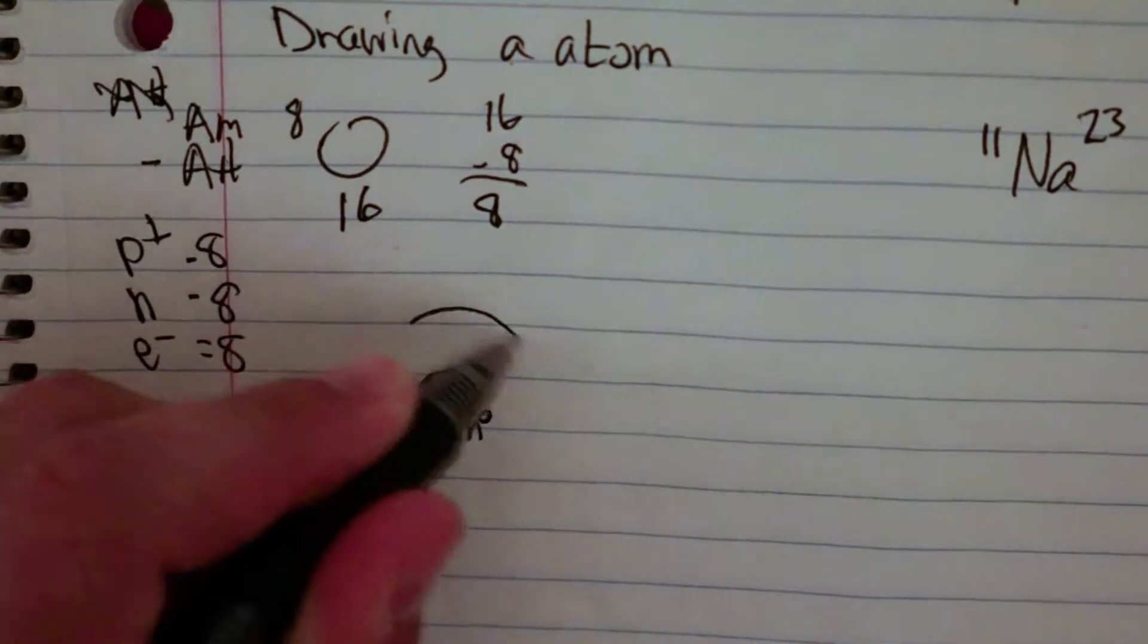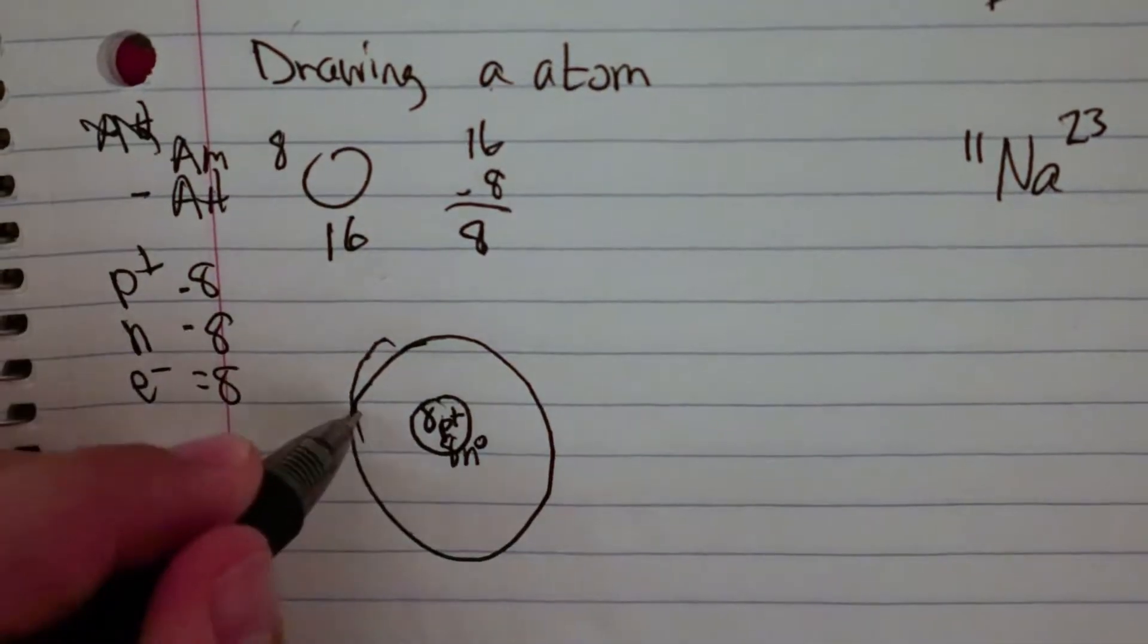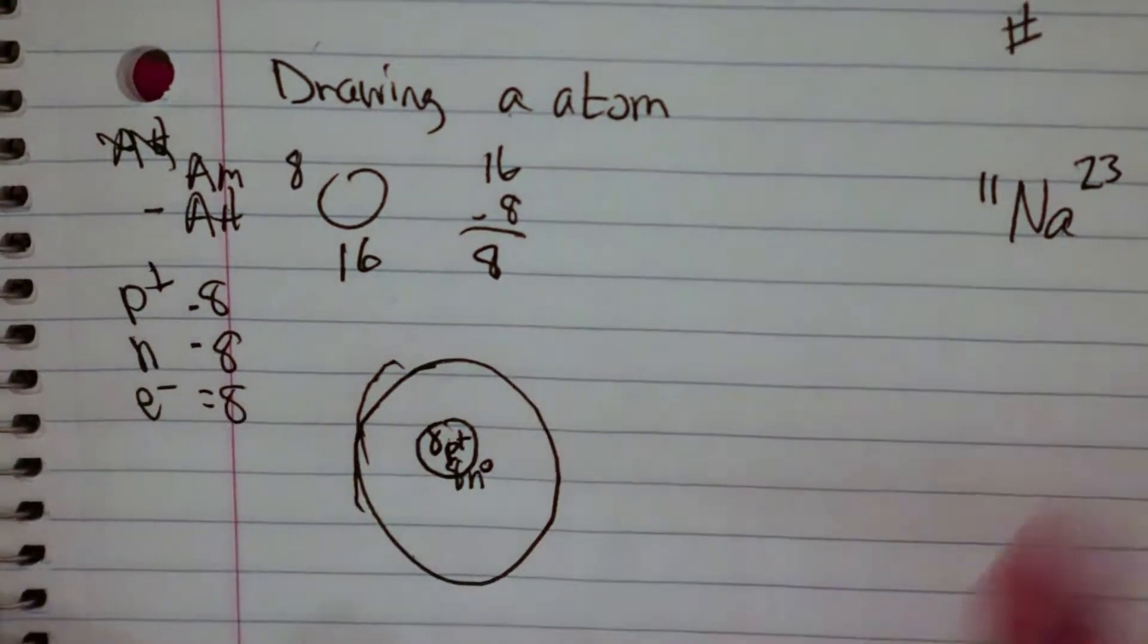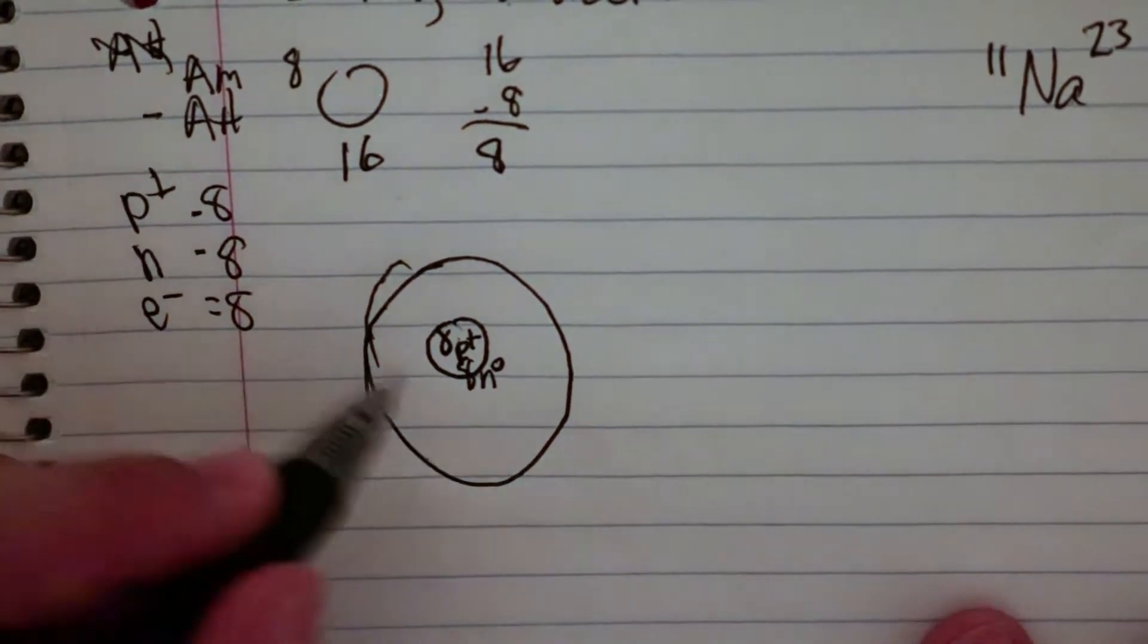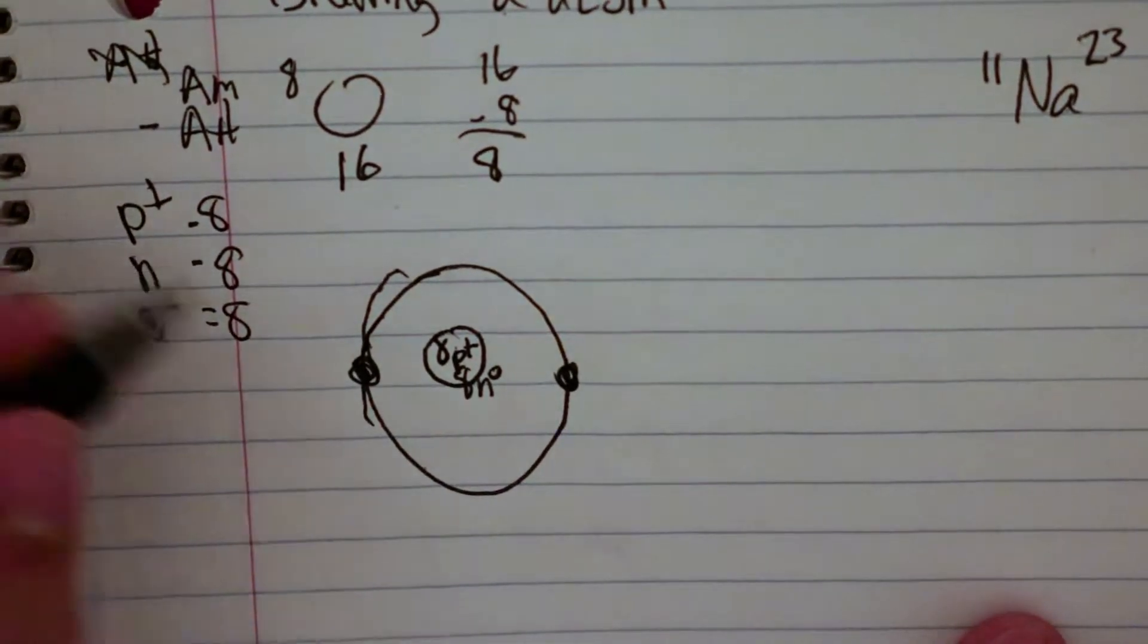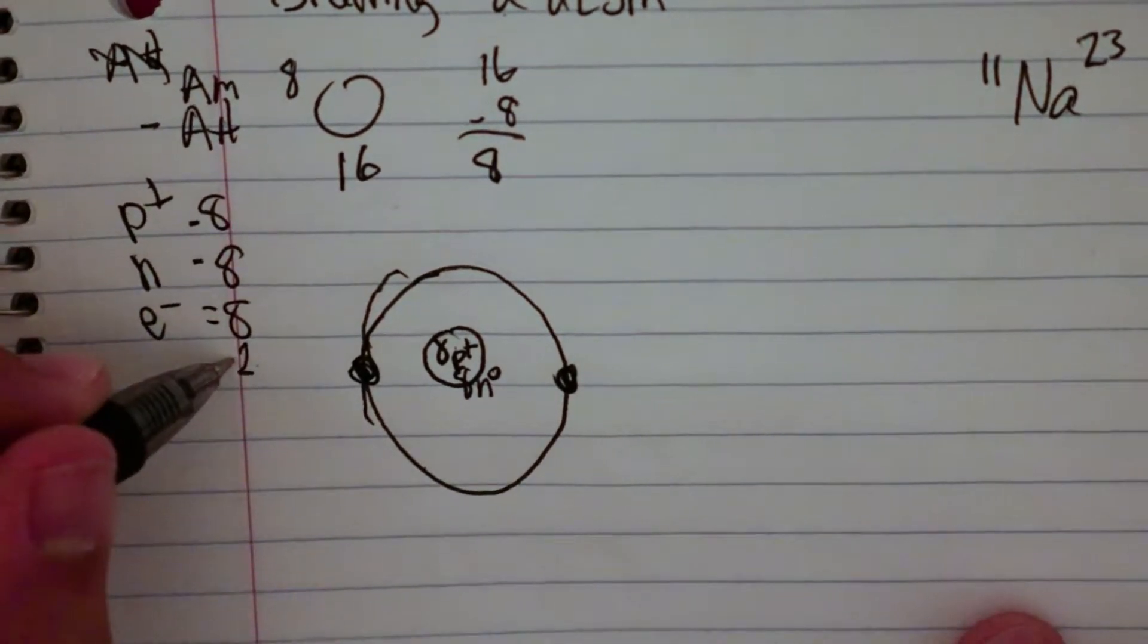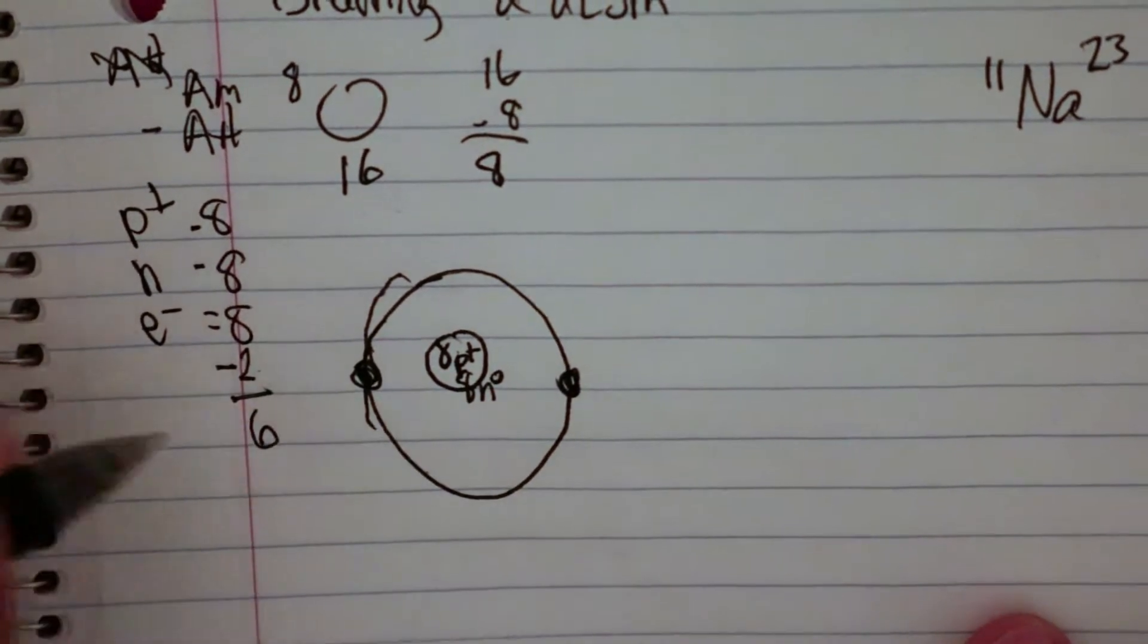So then I'm going to draw a ring, and this is going to get into energy levels. For a Bohr model, you have rings, and every ring has a certain number of electrons it can hold, and the first ring can only hold 2. So I put 1 electron here, and 1 electron here. So that takes out 2 electrons, so I'm going to subtract it from my total number of electrons I have, and that leaves me with 6 electrons.